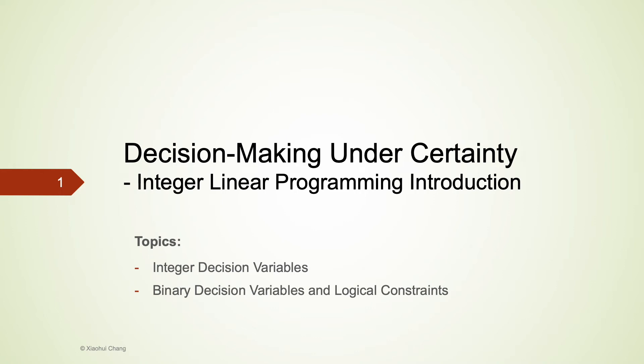In this video, I will introduce the type of linear programming problems where the decision variables cannot be any numbers but only integers. This video will be divided into two parts. In the first part, we will focus on integer decision variables. In the second part, we will consider a special type of integer decision variables, binary decision variables, and we will also discuss logical constraints.